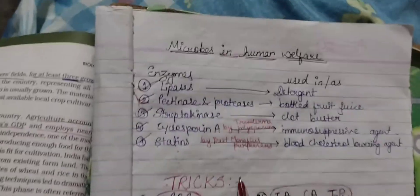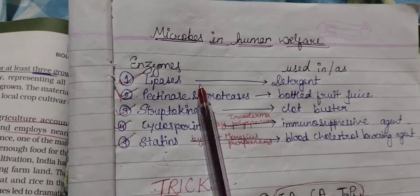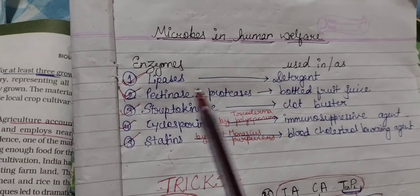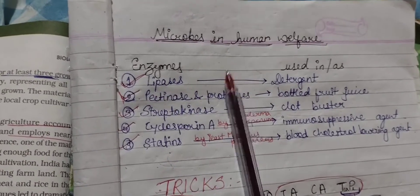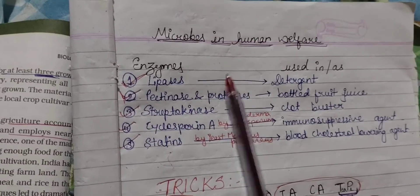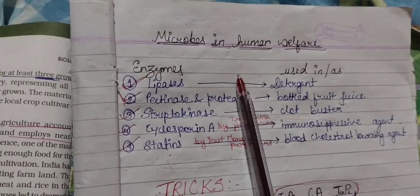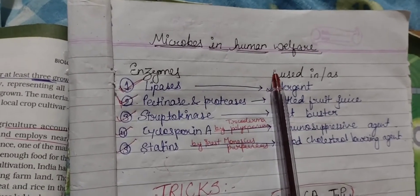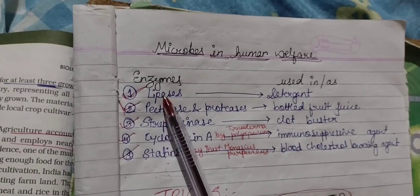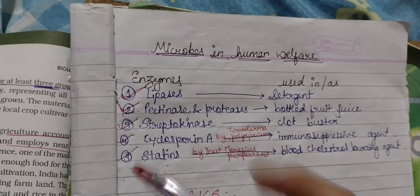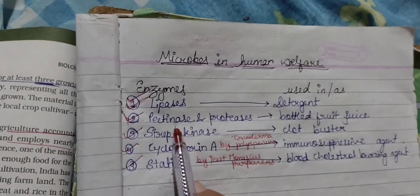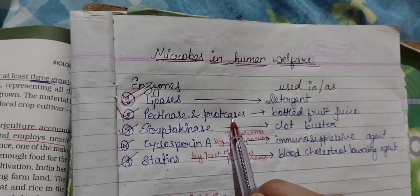First of all, lipase is used in detergent. We can remember: lipase relates to lipids, lipids means oil, oil means dirty clothes, and we will use detergent — so lipase is used in detergent. So we have got it.